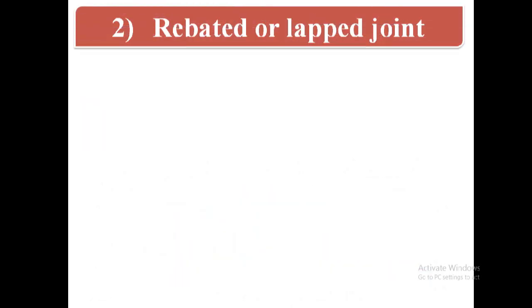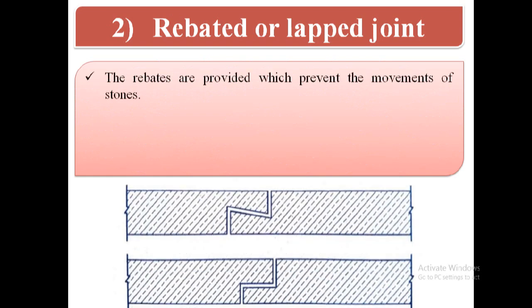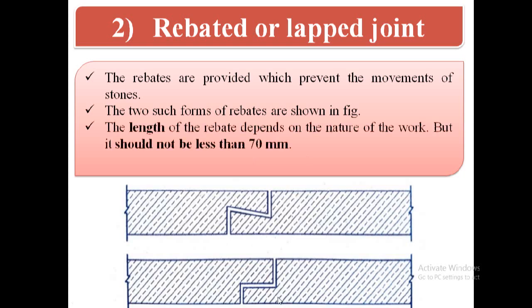Second type of joint is rebated or lapped joint. The rebates are provided which prevent the movement of stones. The two such forms of rebates are shown in figure. In this figure, we can see these two forms of rebates which are provided to prevent the movement of stones.